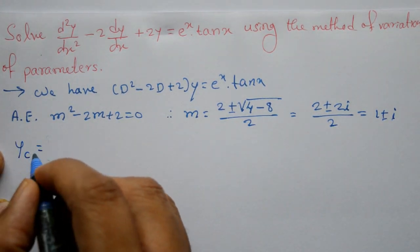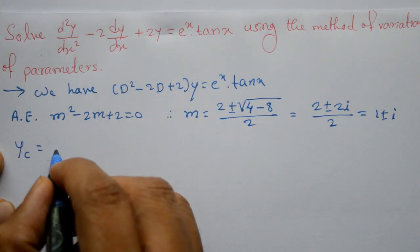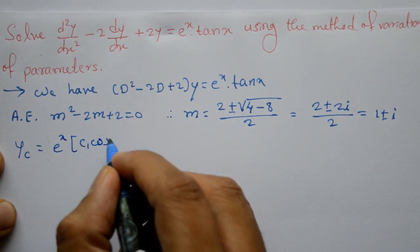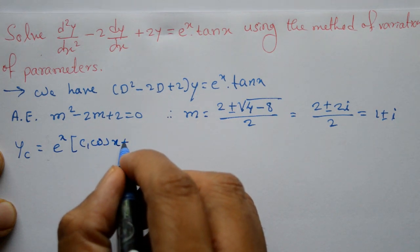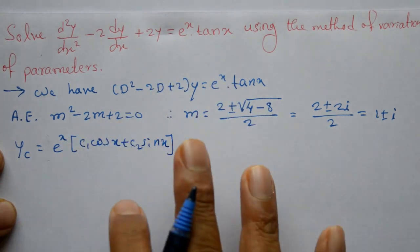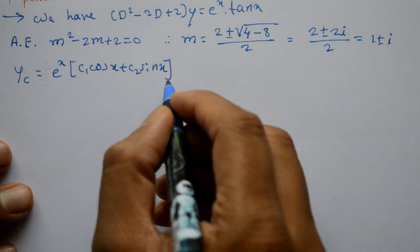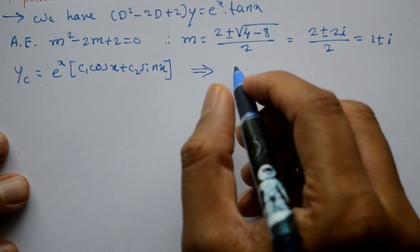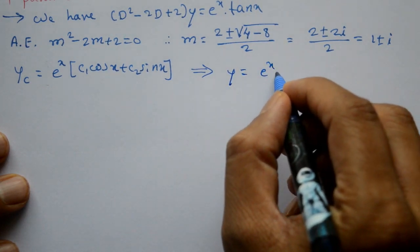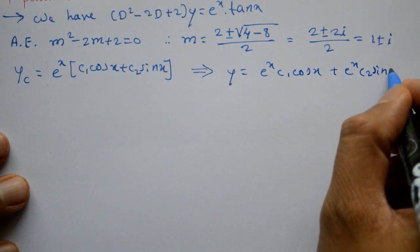The complementary function uses these complex roots. This is a complex root where alpha equals 1 and beta equals 1. So the complementary function is e^(alpha·x) times (c1·cos(beta·x) plus c2·sin(beta·x)), which gives e^x times (c1·cos x plus c2·sin x).